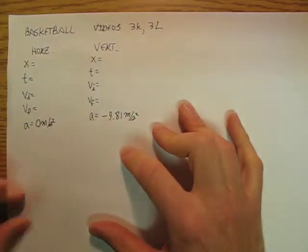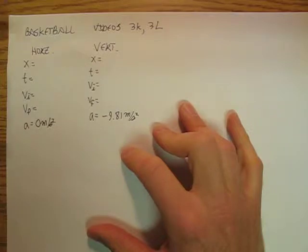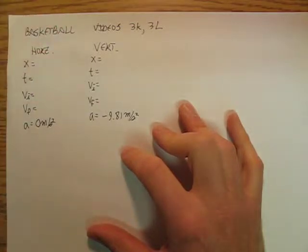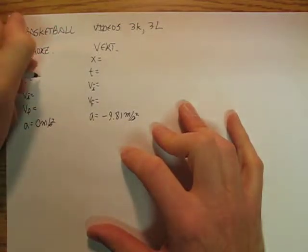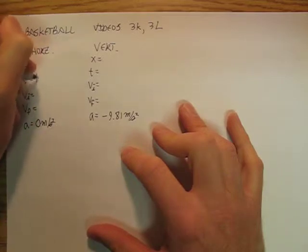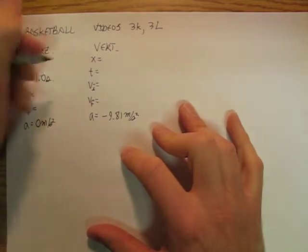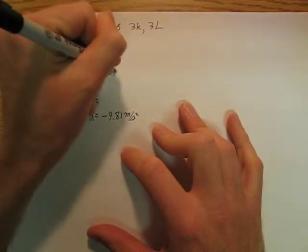Now, I measured on the video that it's about 29 frames for the basketball to go from the hand to the hoop. And so we're just going to call that at 30 frames per second, we're going to call that 1 second.